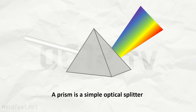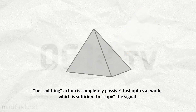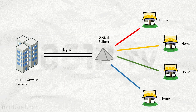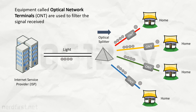What's cool about this is that the splitter is completely passive — no computation, no power needed even. Each one of these beams can then be transmitted to each user. Of course, each beam must carry everyone's information. Equipment installed at the user's premises will then filter out all but what's relevant for them.